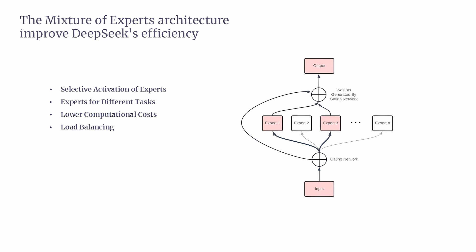The fourth feature is load balancing. One challenge with having multiple experts is ensuring some don't get overworked while others remain idle. DeepSeek solves this using a technique called expert choice routing. This means the model evenly distributes tasks among experts, so no single expert gets overloaded and all experts contribute effectively, improving overall performance. This balance ensures consistent and reliable AI responses across different types of queries. In summary, DeepSeek's mixture of experts architecture enhances power and efficiency by selectively activating task-specific experts, optimizing computational costs, and enabling scalable load balancing, making it a competitive and practical AI solution.